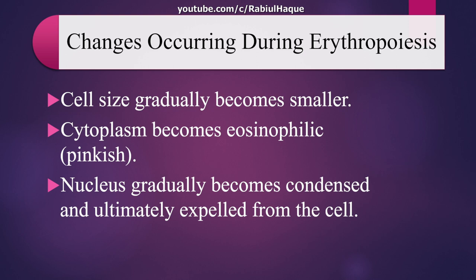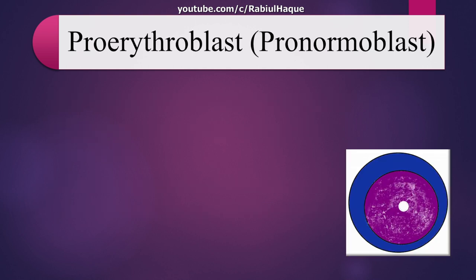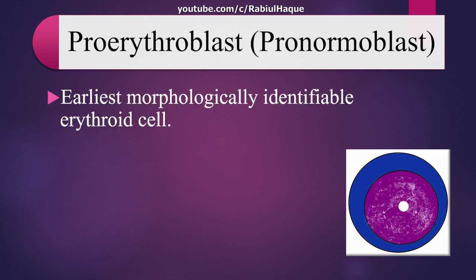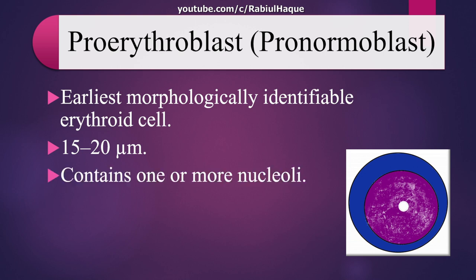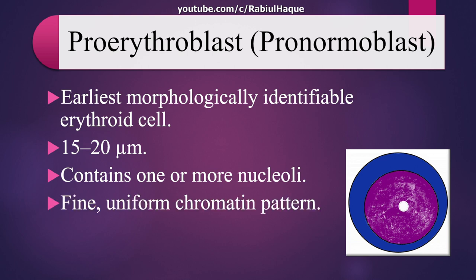The first stage is known as pronormoblast or pro-erythroblast. This is the earliest morphologically identifiable erythroid cell. The diameter is 15 to 20 micrometers. It will contain one or more nucleoli, the chromatin pattern will be fine and uniform, and the cytoplasm will be dark blue.